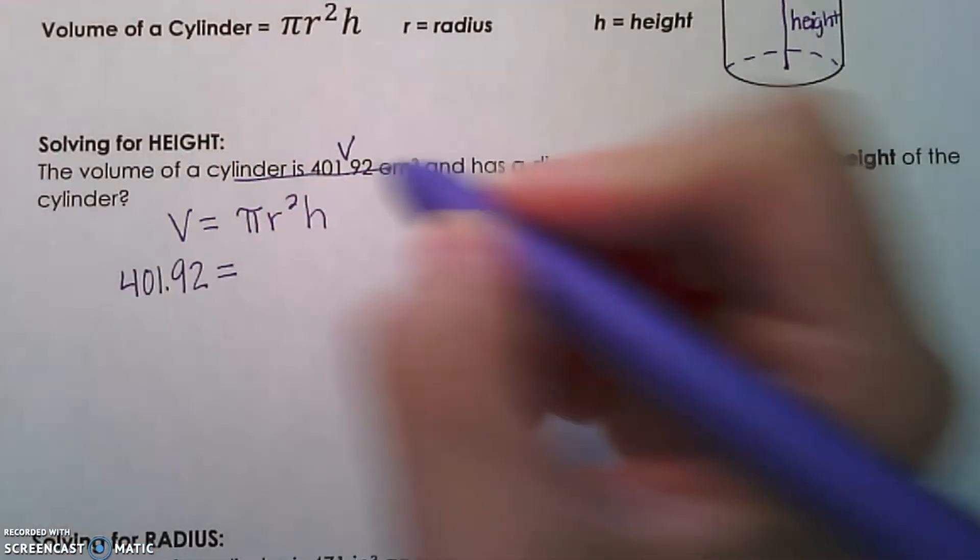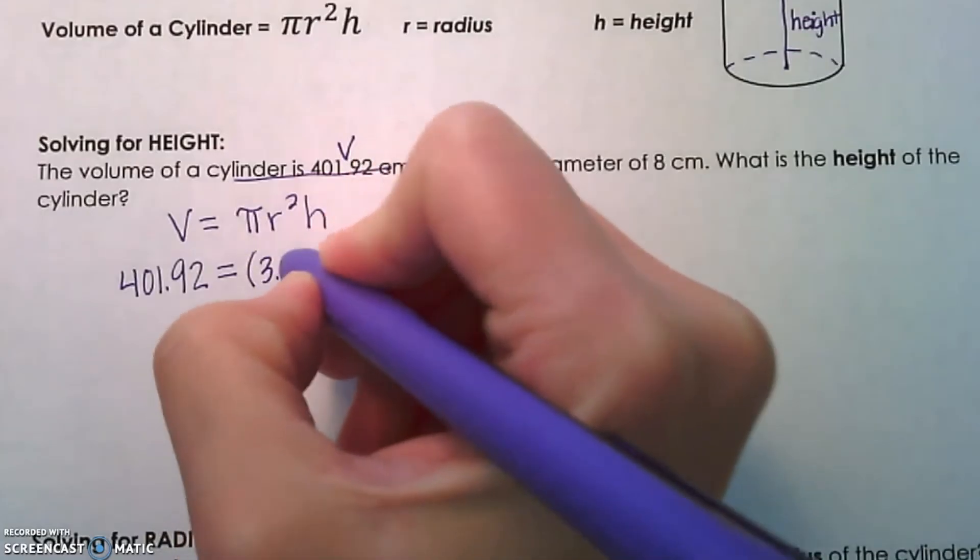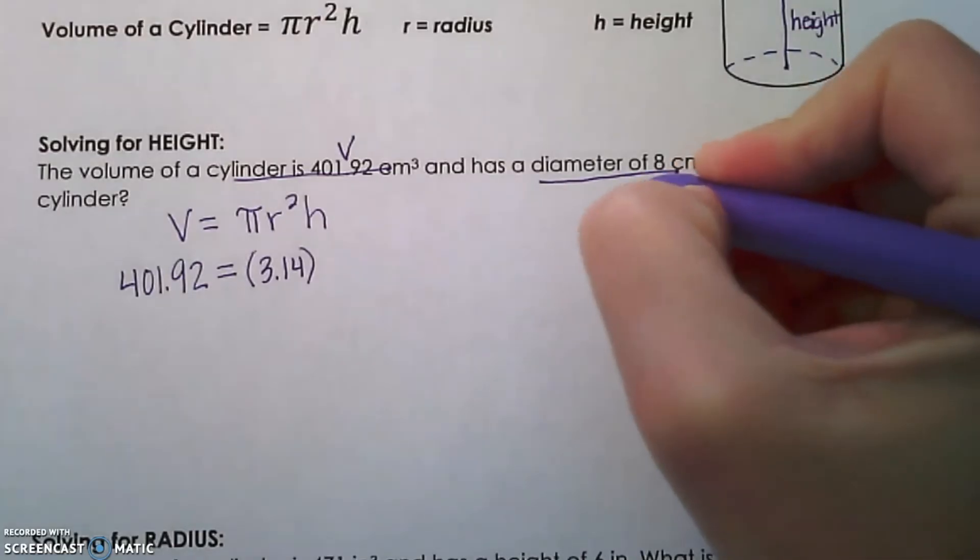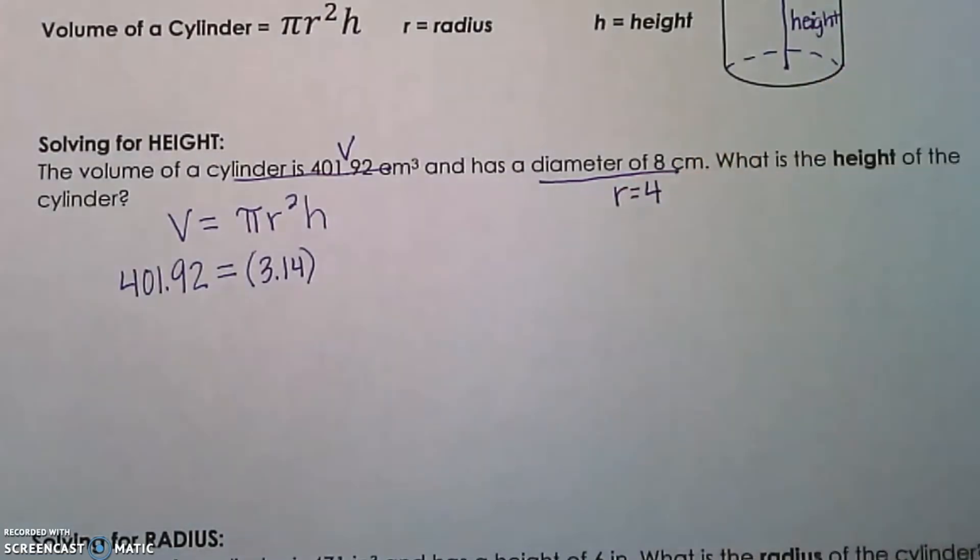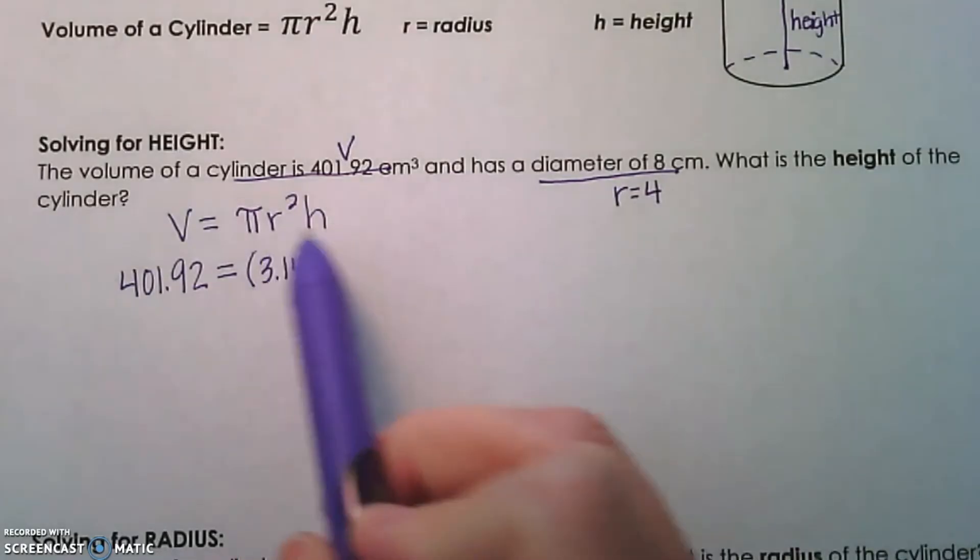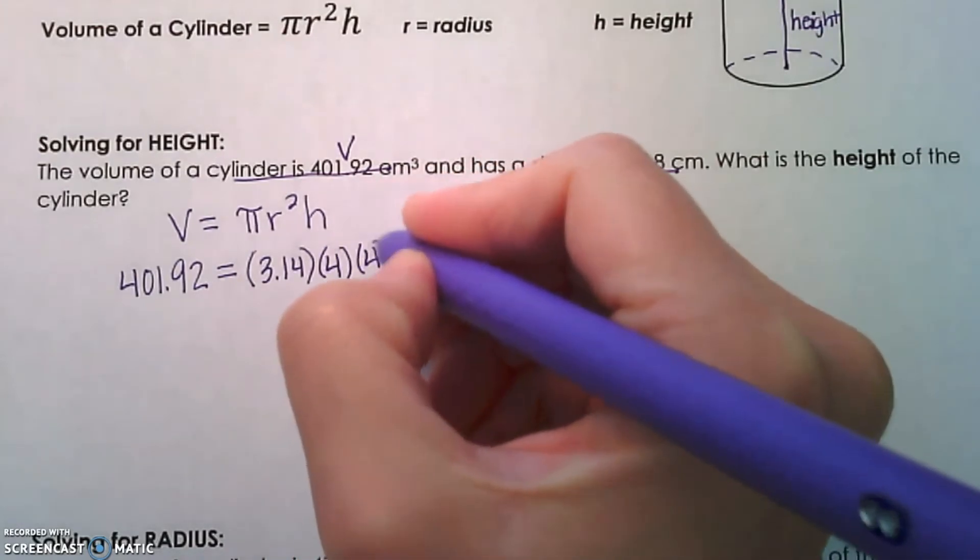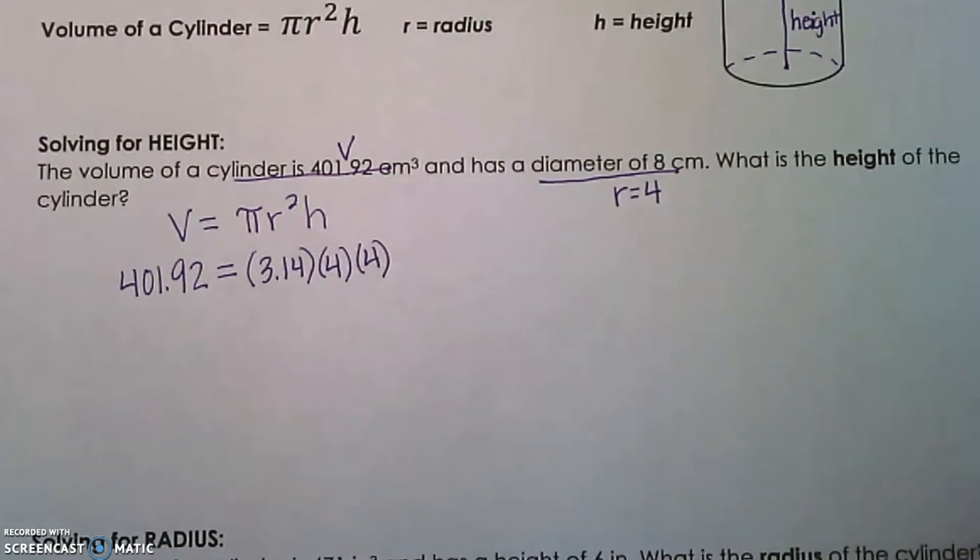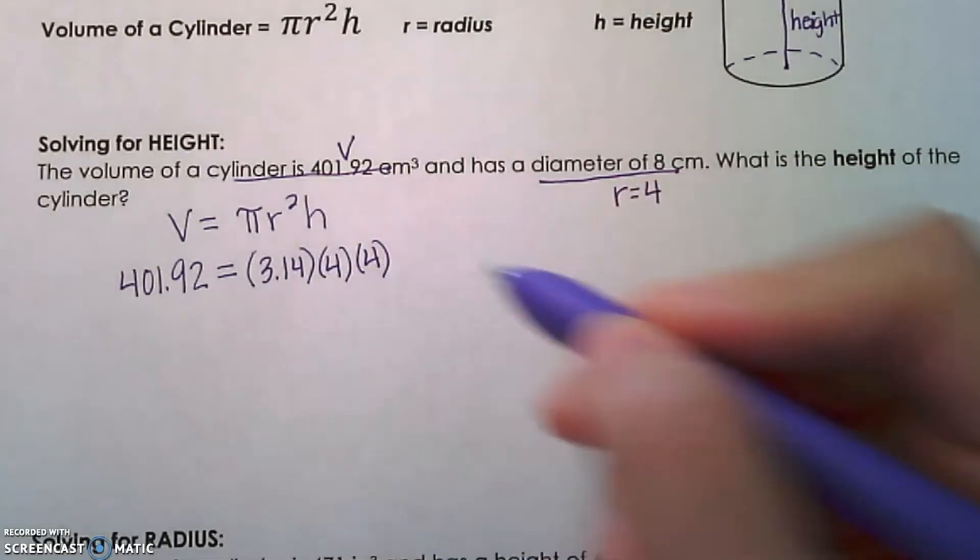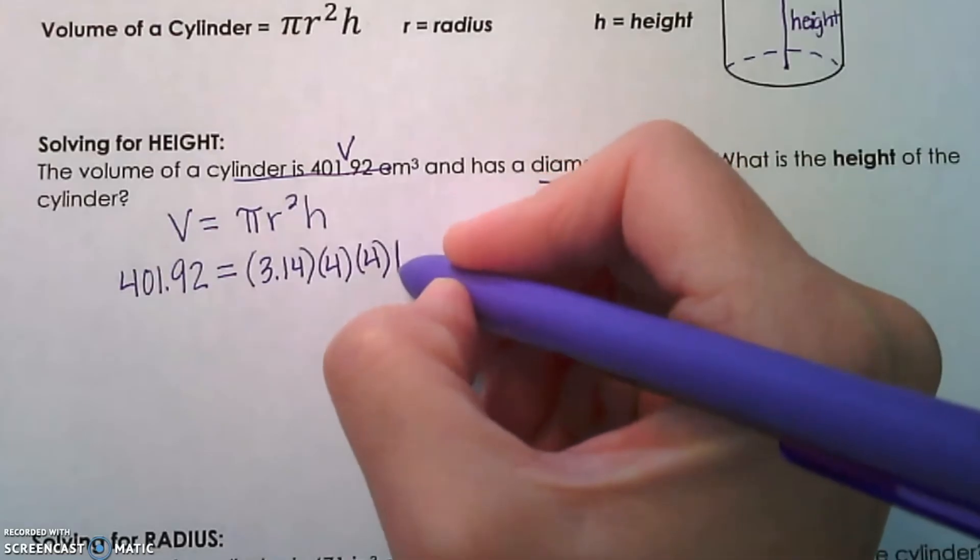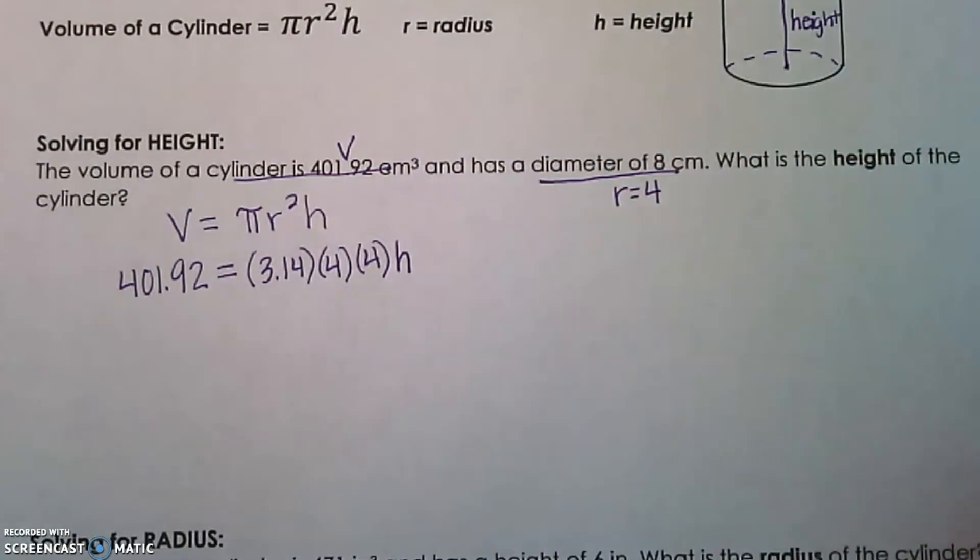We're going to use 3.14 for π in all of our examples, times the radius squared. Now we're given diameter is 8, so that means the radius is going to be half of that, which is 4. So we're going to use that measurement because that's what our formula is calling for, and we need to square 4. So I'm going to write 4 as a factor twice. I feel like that helps remember that we're multiplying the factor twice instead of multiplying by 2. And then we're looking for height, so we're just going to write h because we don't know what that number is.